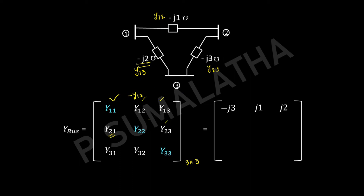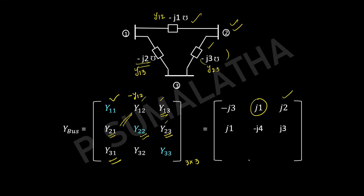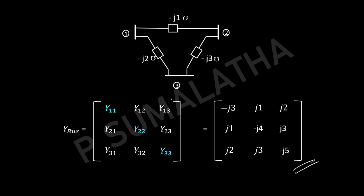Y21 equals Y12, so it is plus J1. Y22 is the sum of admittances connected to the second bus — two lines are connected — giving minus J4. Y23 equals minus of Y23, so plus J3. Y31 equals Y13, so it is plus J2. Y32 equals Y23, so that is plus J3. Y33 equals the sum of admittances connected to the third bus: minus J2 plus minus J3 equals minus J5. This is how we form the bus admittance matrix using the inspection method.